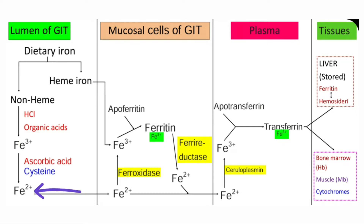The ferrous form of iron is more soluble than the ferric form, so the ferrous form is more readily absorbed. This ferrous form of iron cannot directly enter into the mucosal cells but requires the help of a transporter called the divalent metal ion transporter, DMT.